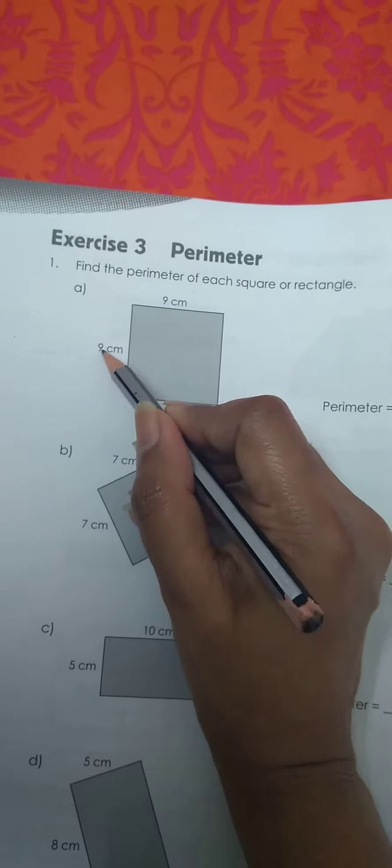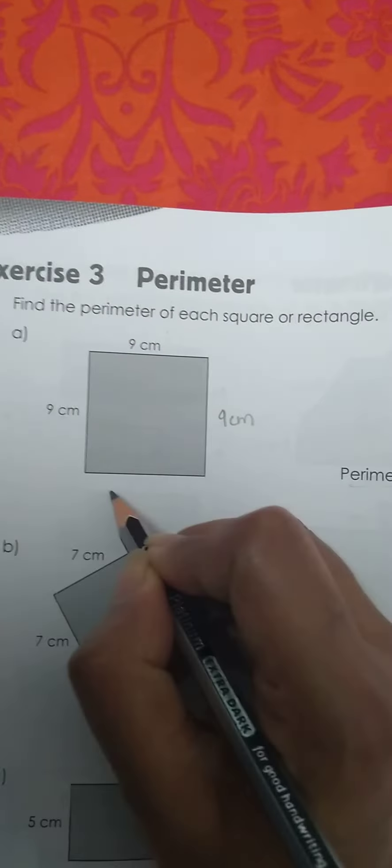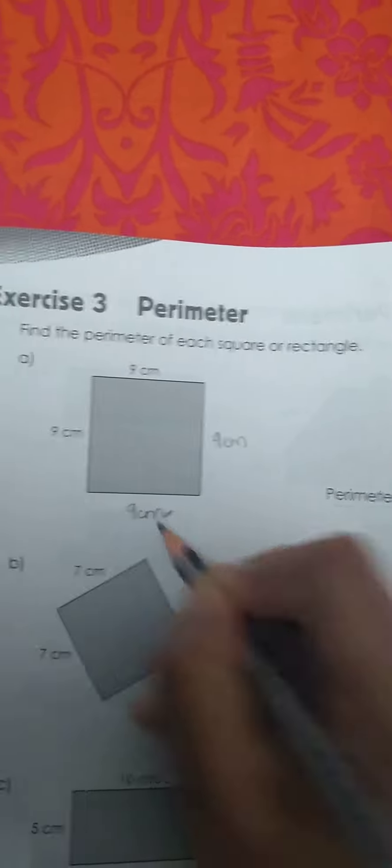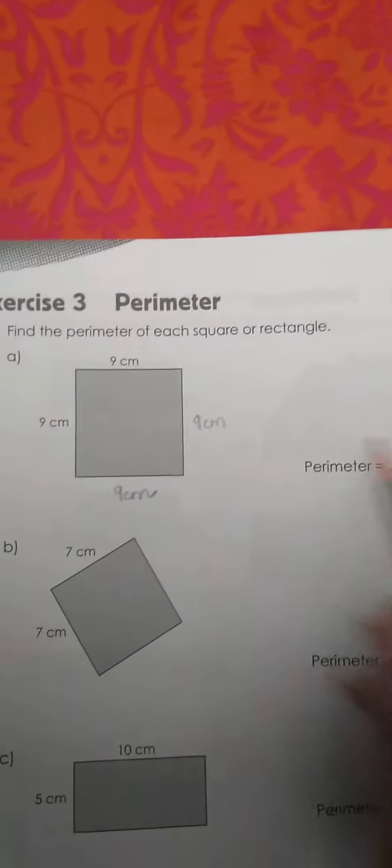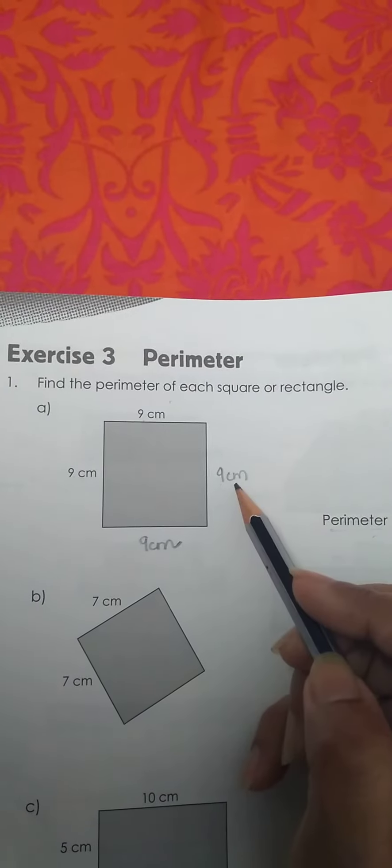This is 9 centimeters, this is 9 centimeters, so this is also 9 centimeters and this is also 9 centimeters. To find the perimeter, add all the nines: 9 times 4, or 9 plus 9 plus 9 plus 9, will give you 36 centimeters.